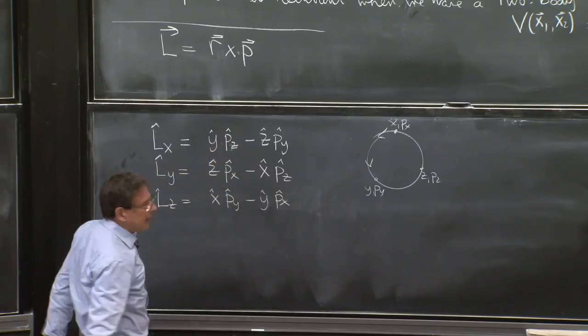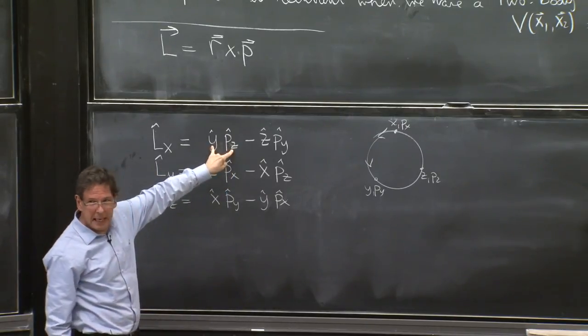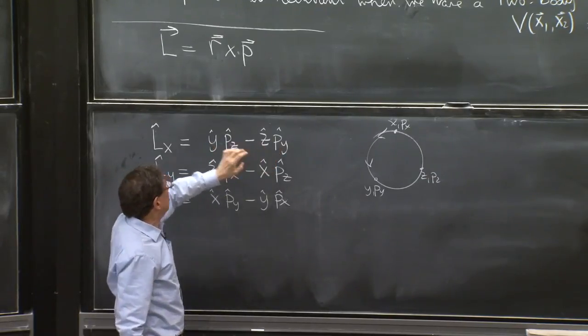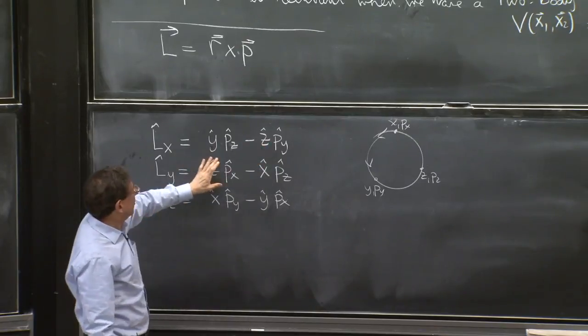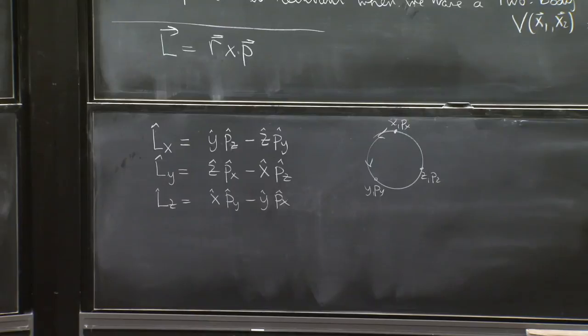Does it matter quantum mechanically? Happily, it doesn't matter, because y and pz commute. z and py commute. So you could have even written them the other way, and they're good. All of them are unambiguous.